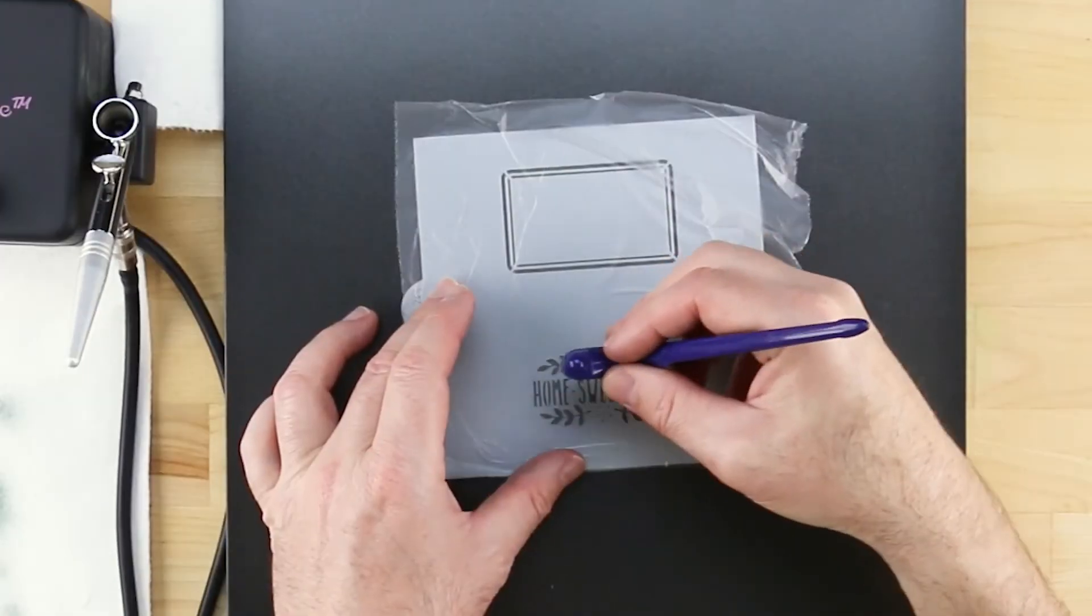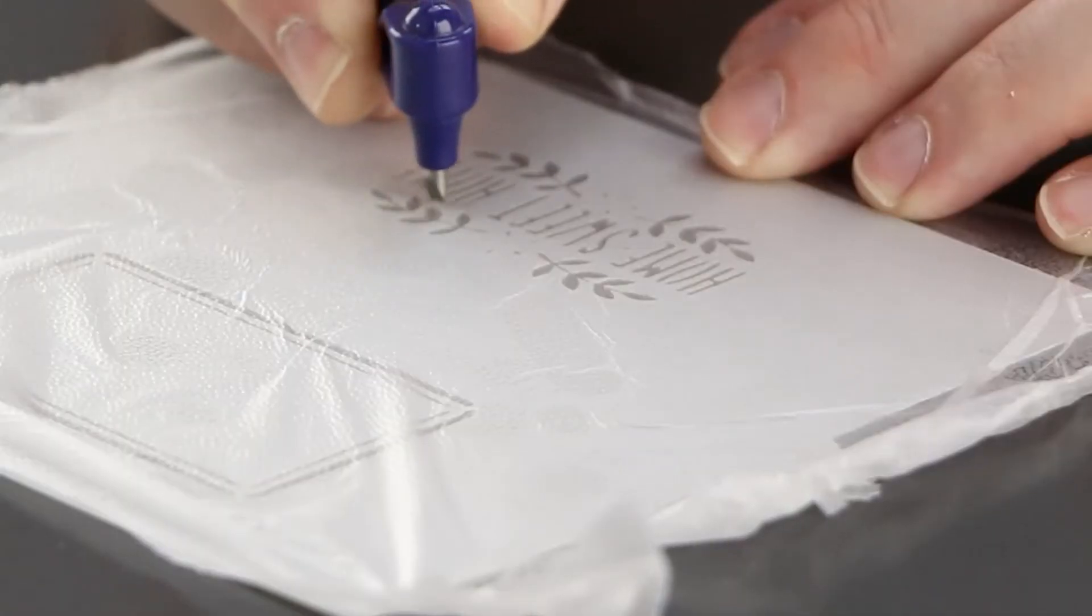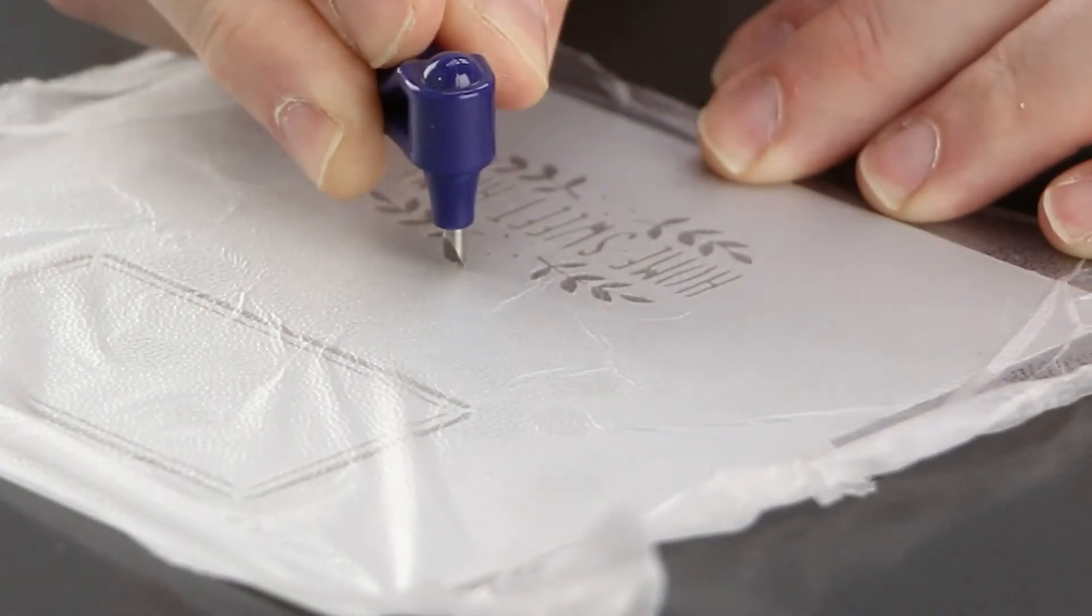When used in conjunction with Glad Press & Seal, GyroCut is perfect for isolating those smaller design elements on more intricate stencils.